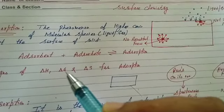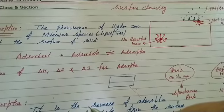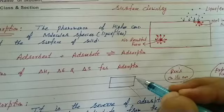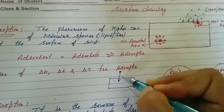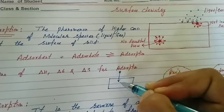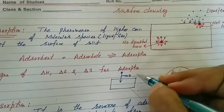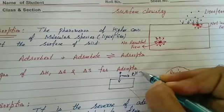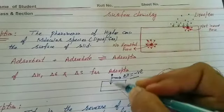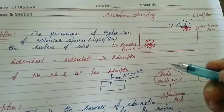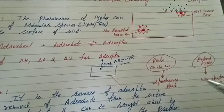Enthalpy change, free energy change, and entropy change. At the surface where adsorption takes place, molecules come and form bonds between adsorbate and adsorbent. When there is bond formation, energy is released — it is an exothermic process. So the sign of ΔH for adsorption is negative. For ΔG: we know two types of reactions — spontaneous and non-spontaneous.